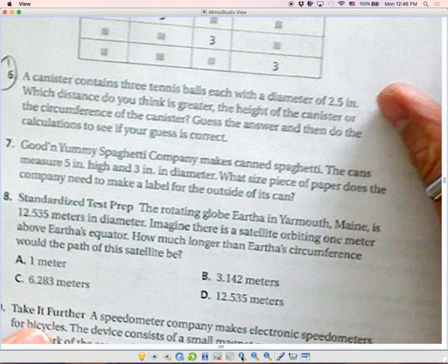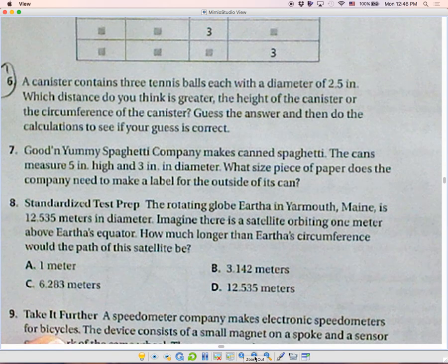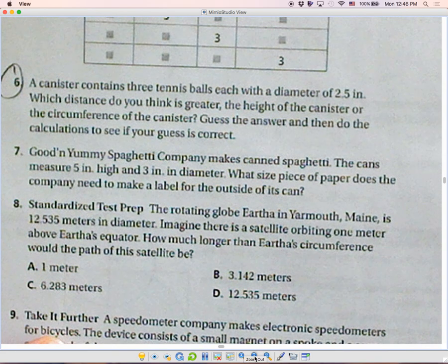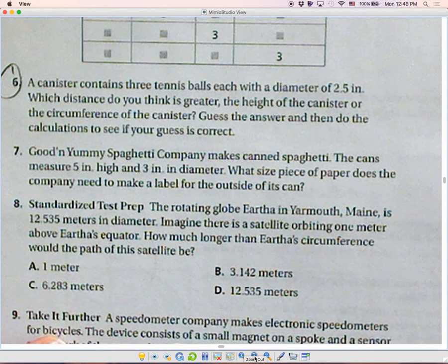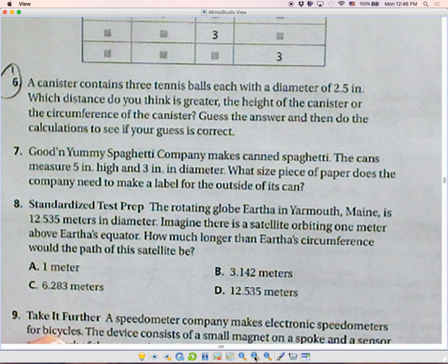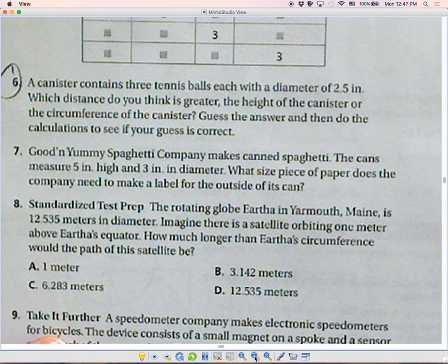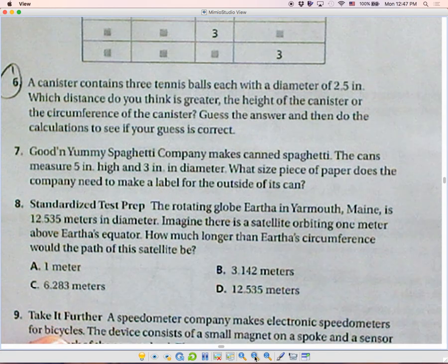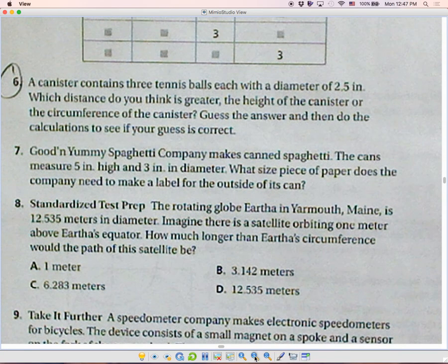Let's look at number 6. It says a canister contains three tennis balls, each with a diameter of 2.5 inches. Which distance do you think is greater, the height of the canister or the circumference of the canister? Guess the answer and then do the calculation to see if your guess is correct. So what do you think?